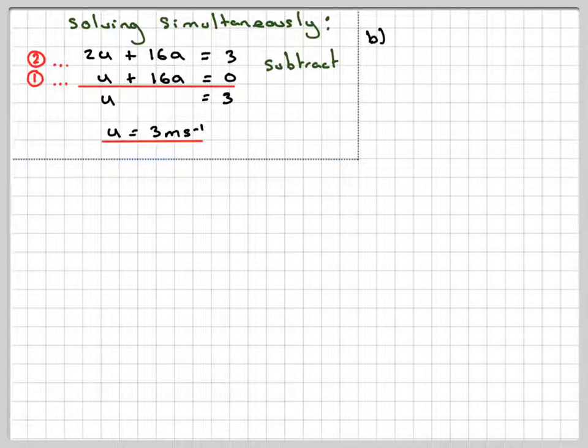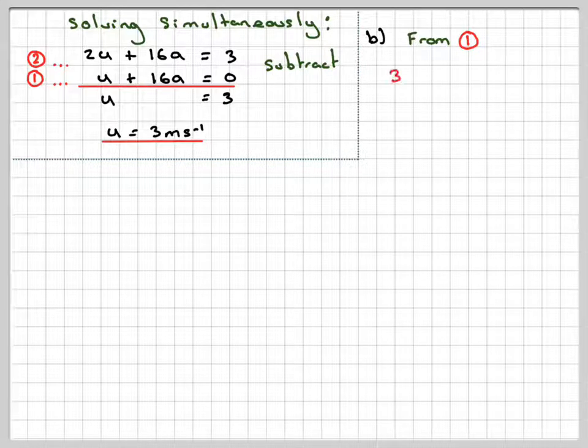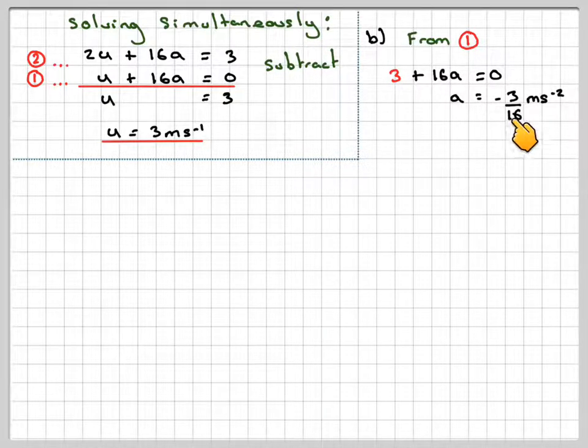Before we do part b, we'll need to find the acceleration. So if we put our value of u into equation 1, we're going to get 3 plus 16a is equal to 0. And that will give me that a is minus 3 over 16 metres per second squared.